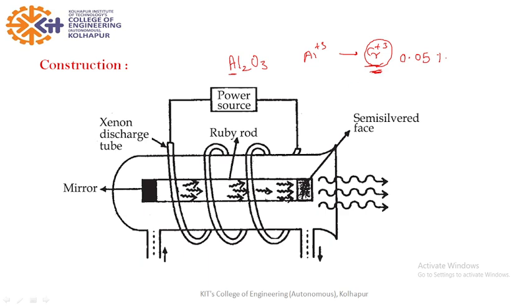Now you can see this figure. This is the construction. It consists of a ruby rod, long and thin rod. Its diameter is in millimeter, less than one millimeter, and its length is in centimeter.